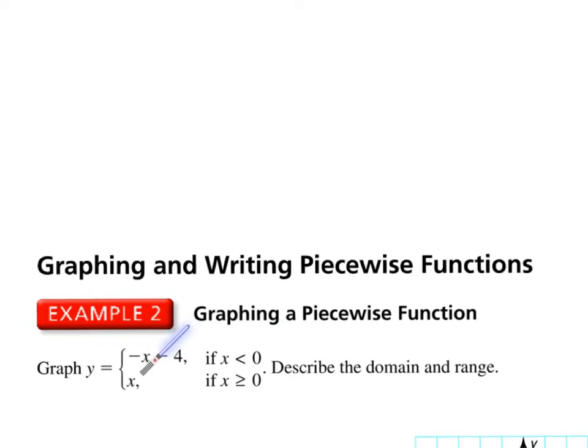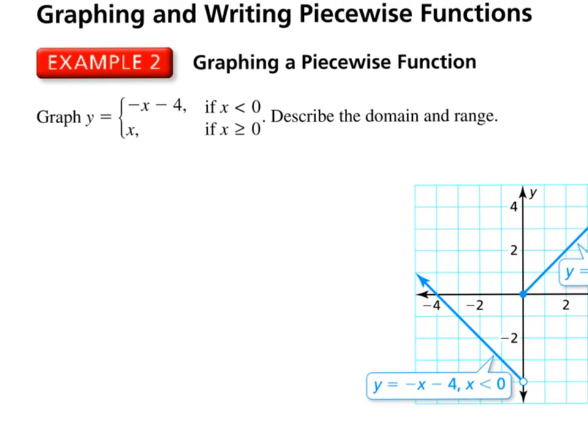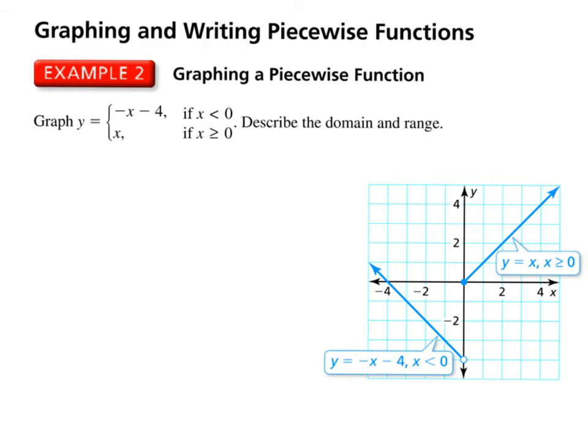But you have to start at 0. Because 0, if we plug it in, is going to give us negative 4. But since it's not a solution, you're going to do an open circle. So let me slide this up. If you notice right here, I have to plug in 0. Because that's my starting point. But 0 is not a solution, since it has to be less than 0. So we put an open circle right there.